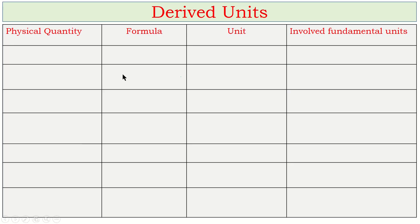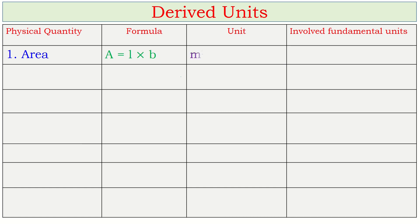Now entering derived units — I want to show which physical quantity is measured by which formula, what its unit is, and which fundamental units are involved. First: area. Area = length × breadth. Its unit is meter squared. The fundamental unit meter multiplies with another meter to form meter squared, so the fundamental units involved are meter twice.